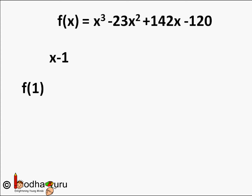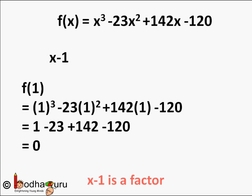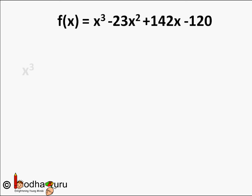Is (x - 1) a factor? The zero of (x - 1) is 1, since x - 1 = 0 gives x = 1. So f(1) = 1³ - 23×1² + 142×1 - 120 = 1 - 23 + 142 - 120 = 0. So indeed (x - 1) is a factor. Since this is a cubic polynomial, it will have three factors.